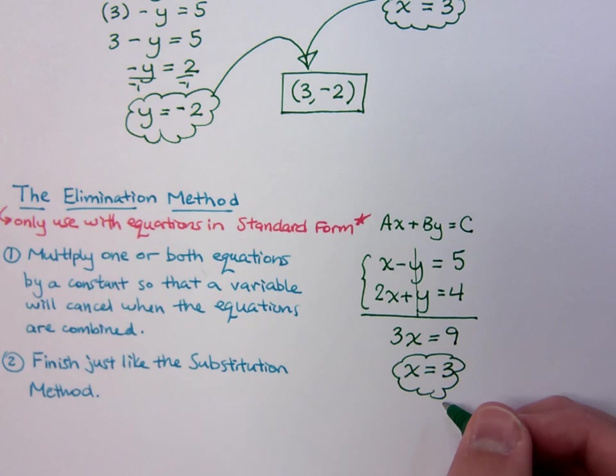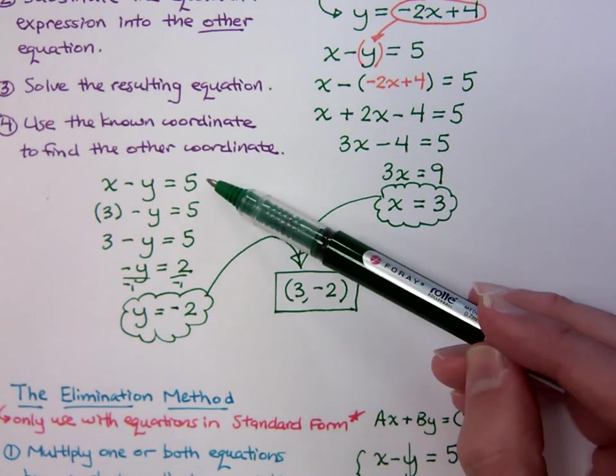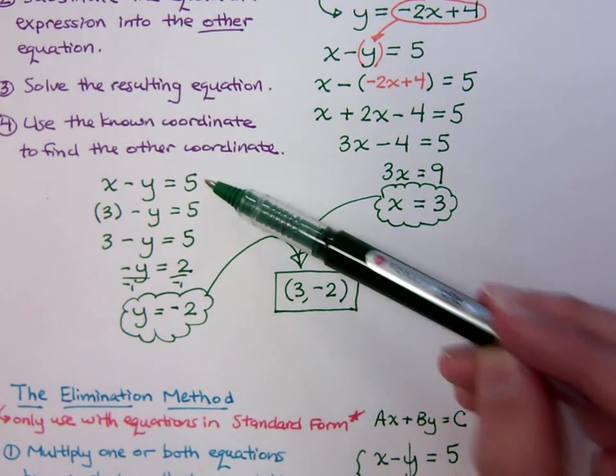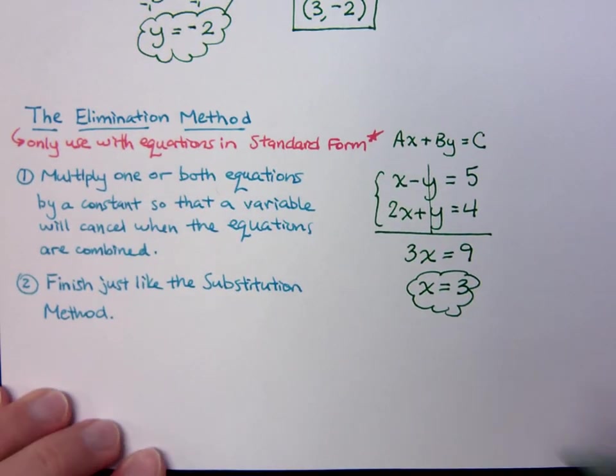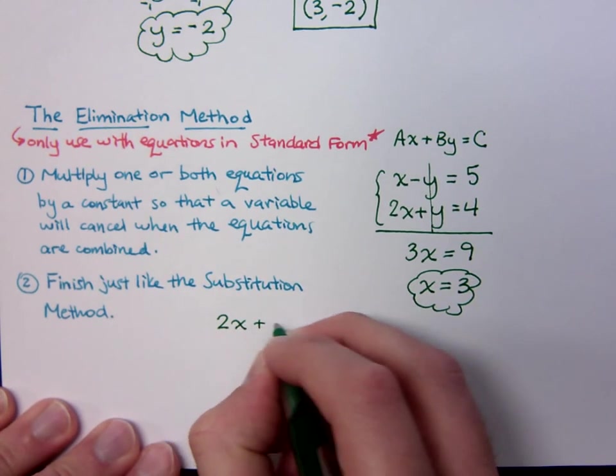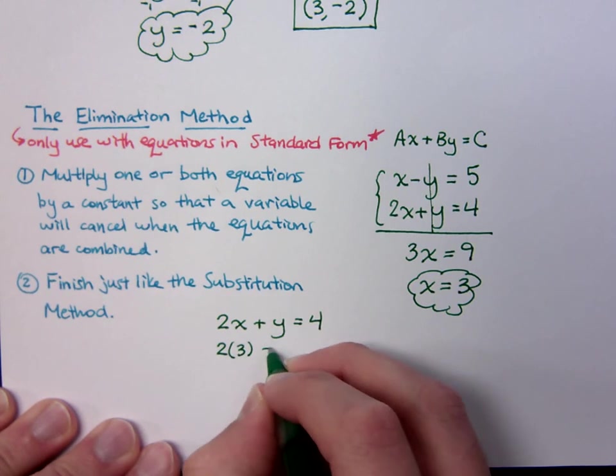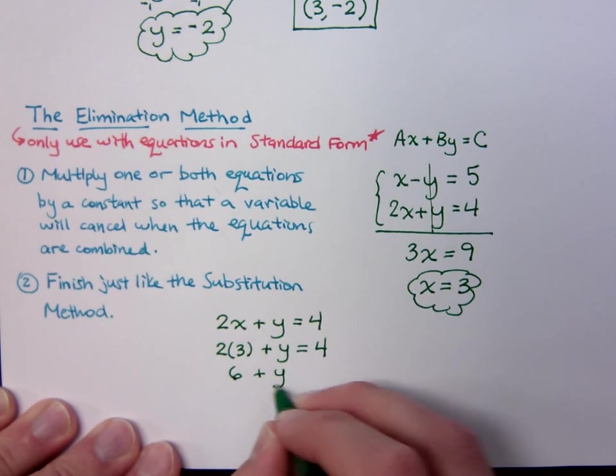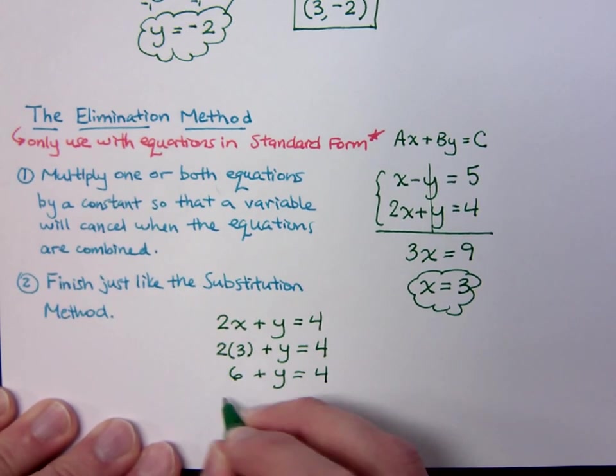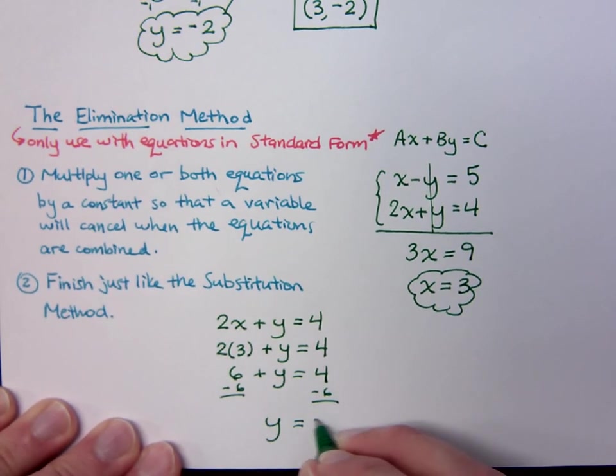So x equals 3, and I find out what y is. Now the last time up here, notice that I plugged my 3 into x minus y equals 5. Just so you know that I'm not playing games with you, you can plug it into the other equation, the 2x plus y equals 4. So if I replace this x with 3 and solve for y, I should get the same value that I had before. Well I get 6 plus y equals 4, and when I subtract 6 on both sides, we get that y equals negative 2.